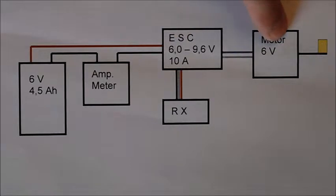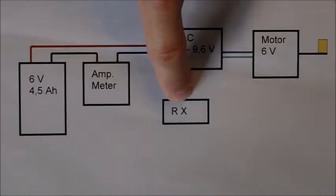The current flows from the battery to the speed controller and is portioned out by pulse-width modulation to the electric motor.